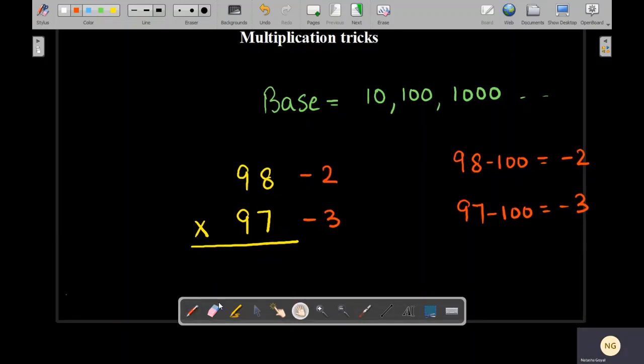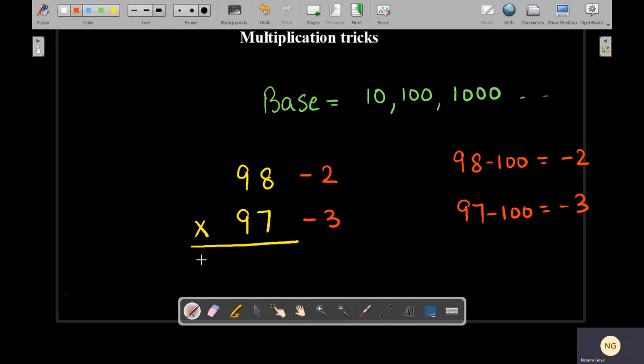Now the next step is to find the sum and the product. So we'll create a partition over here. We'll write the sum and we'll write the product. So the sum: 98 plus minus 3 will give us 95, and 97 plus minus 2 will also give us 95. So we'll write 95 over here.